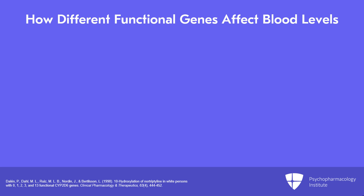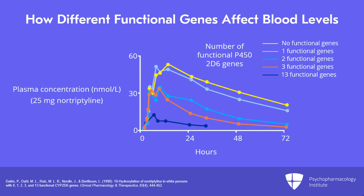There are studies supporting the idea that different functional genes affect the blood levels of medications. A 1998 study looked at CYP2D6 and classified patients according to whether they had zero, one, two, three, or even thirteen functional genes due to duplication. They gave patients a dose of 25 milligrams of nortriptyline, which is classically 2D6 metabolized, and measured blood levels over 72 hours. An ultra-rapid metabolizer with 13 copies cleared the dose within 24 hours, while a person with no functional genes still had almost half the dose remaining after three days — though some medicine was still being processed.